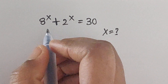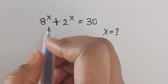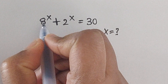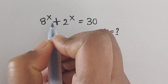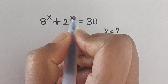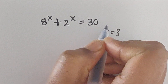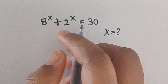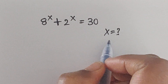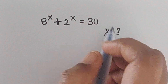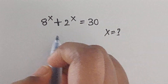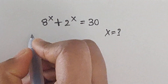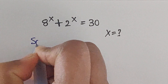Hello everyone, welcome back to our channel. Here we have one problem: 8 to the power of x plus 2 to the power of x equals 30. In this problem we have to find the value of x. Let's see the solution.